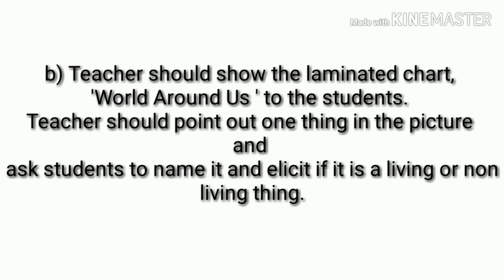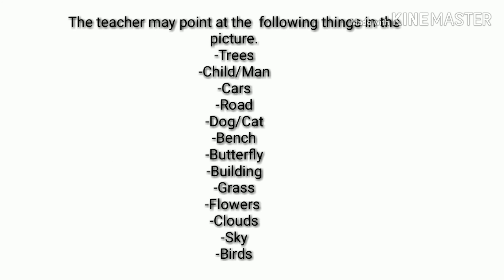After explaining the characteristics of living things, the teacher should show a laminated chart of 'World Around Us' to students. The teacher should point out one thing in the picture and ask students to name it, then elicit whether it is a living or non-living thing. Things pointed out may include trees, a child, a man, cars, road, dog, cat, benches, butterfly, building, grass, flowers, clouds, sky, and birds.